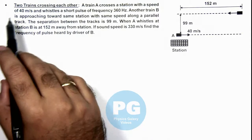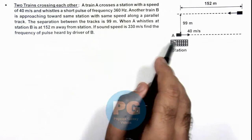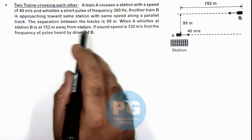In this illustration, we'll discuss a case when two trains are crossing each other. We are given that train A crosses a station with a speed of 40 meters per second and whistles a short pulse of frequency 360 hertz. Another train B is approaching towards the same station with the same speed.